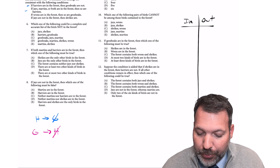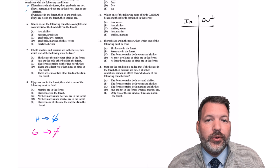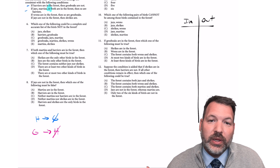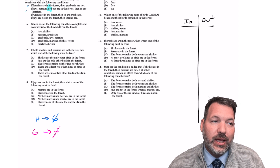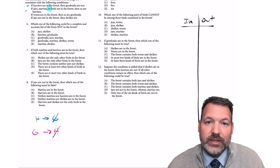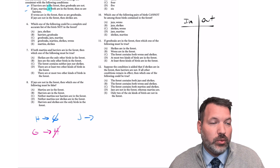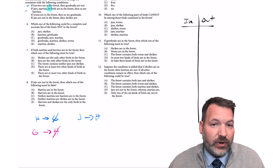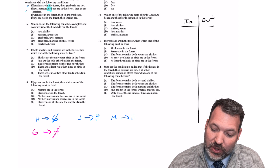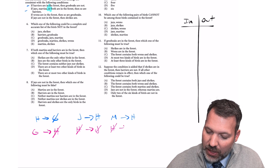Moving on to the next clue: if J's, Martins, or both are in the forest, then so are Harriers. With 'or' on the if-side of a conditional statement, we can separate it out. If J is in, regardless of M, Harriers must be in. Similarly, if M is in, regardless of J, Harriers must be in. The contrapositives: if H is not in, then J is not in; and if H is not in, then M is not in.